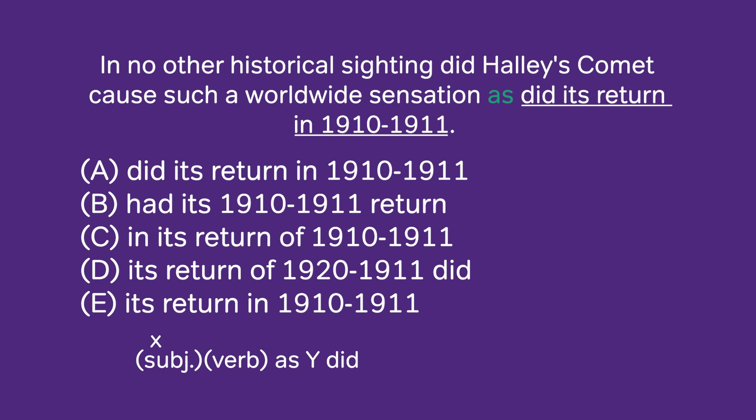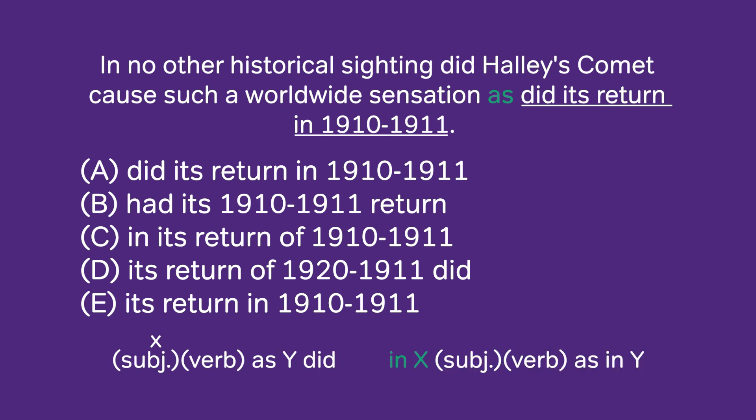The first object of comparison is in the preposition 'in X.' So we get 'in X, subject and verb, as,' and then we have to have a parallel 'in Y.' That's the correct structure we're looking for.